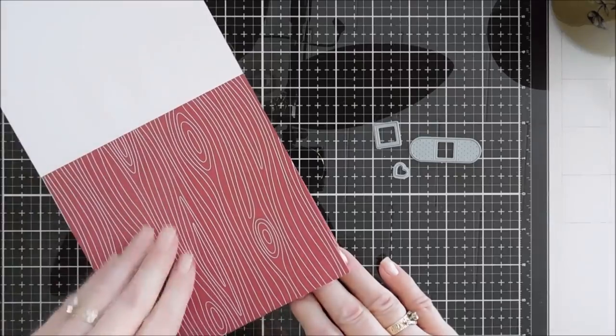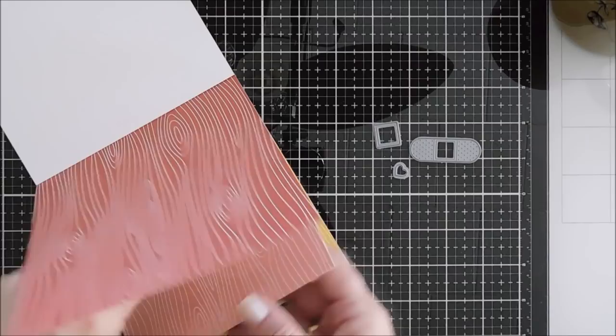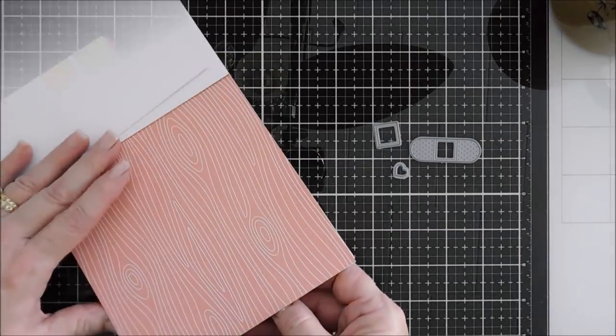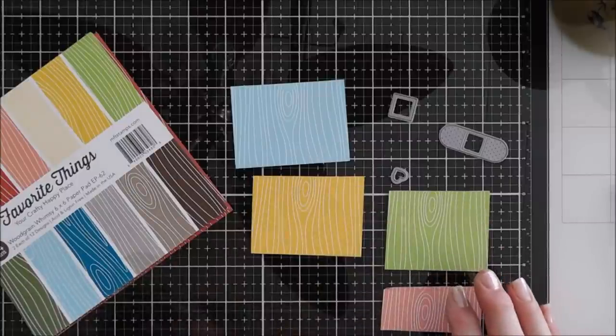But this is the paper pad. All of the prints are the same, they're just different colors. So I'm going to go ahead and trim down four lighter colors of the woodgrain patterned paper and we're going to die cut out our small band-aid with those.